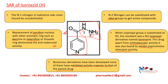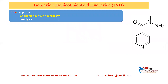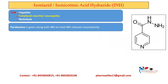Next are the adverse drug reactions of Isoniazid: hepatitis, peripheral neuritis or neuropathy, and hemolysis. To minimize peripheral neuropathy, pyridoxine — that is vitamin B6 — is given along with Isoniazid so that these adverse reactions are reduced.